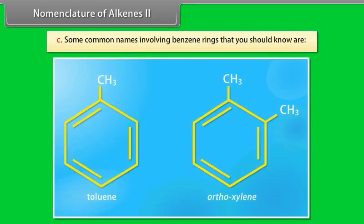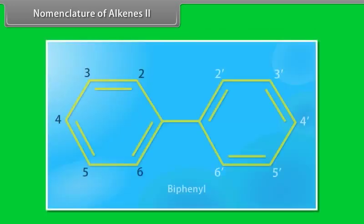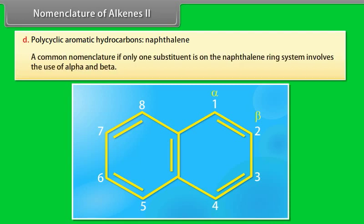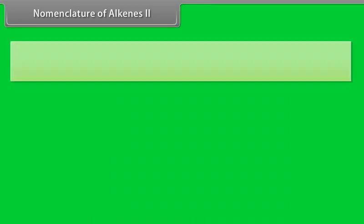Nomenclature of alkenes 2. C. Some common names involving benzene rings that you should know are toluene and orthoxylene, biphenyl. Notice the numbering convention for this compound. D. Polycyclic aromatic hydrocarbons that you should know are naphthalene. A common nomenclature if only one substituent is on the naphthalene ring system involves the use of alpha and beta.